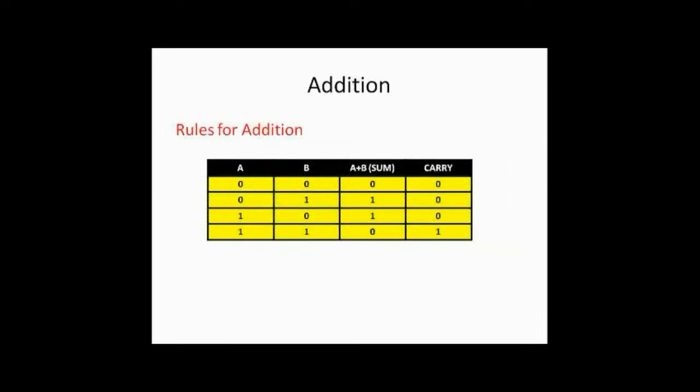First we will see what is the rule of addition. Suppose if you are adding two numbers A and B, we will get a sum A plus B and a carry. So we will see the rules. 0 plus 0, the sum is 0 and the carry is 0. 0 plus 1, the sum is 1, the carry is 0. 1 plus 0, the sum is 1 and the carry is 0. 1 plus 1, the sum is 0 and the carry is 1.